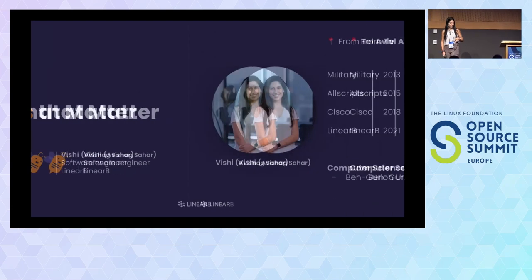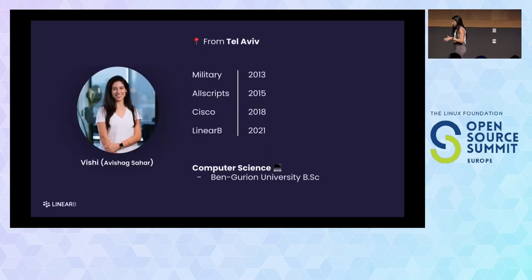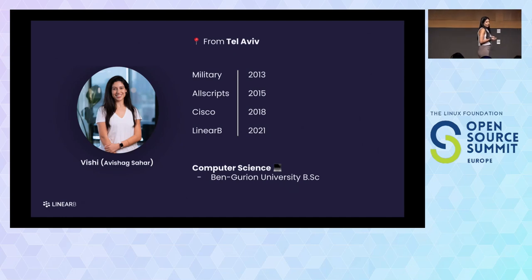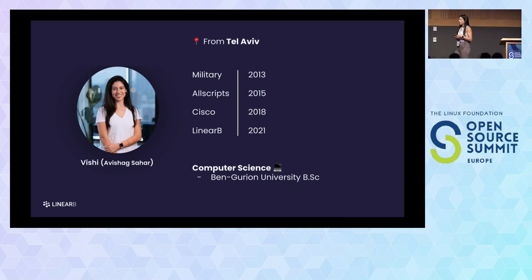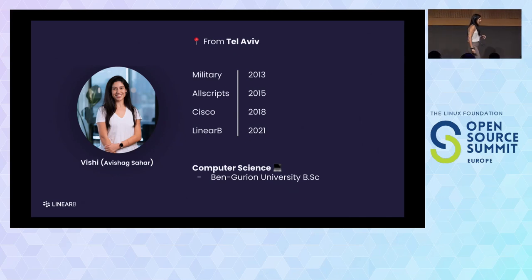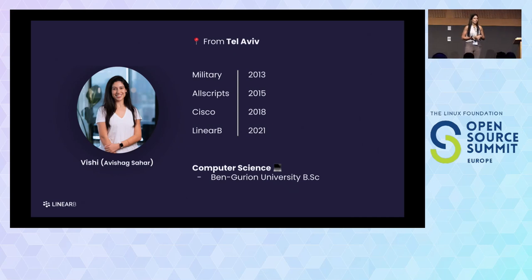Before digging into it, I'm going to briefly introduce myself. I am Avishag, but all my friends call me Vishi — it's shorter, that's my nickname. I live in Israel, Tel Aviv. As you probably hear, I speak Hebrew, that's my main language. I suffer from accent glitches and also grammar and vocabulary from time to time, but forgive me about that. I am a software engineer at LinearB, and on my free time I enjoy dancing — I even used to dance professionally until I joined the army.